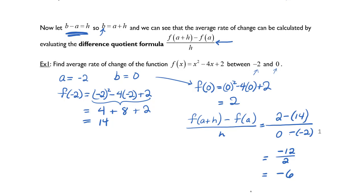So the slope of the line between negative 2 and 0 would be the rate of change between negative 2 and 0 on the parabola.